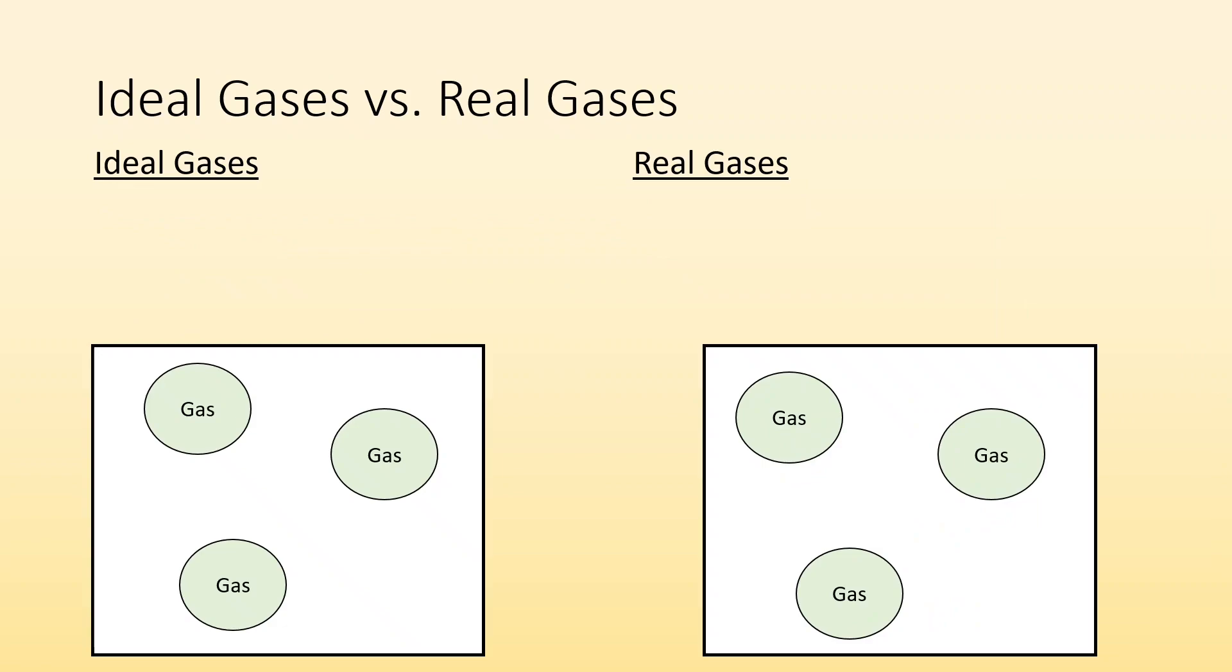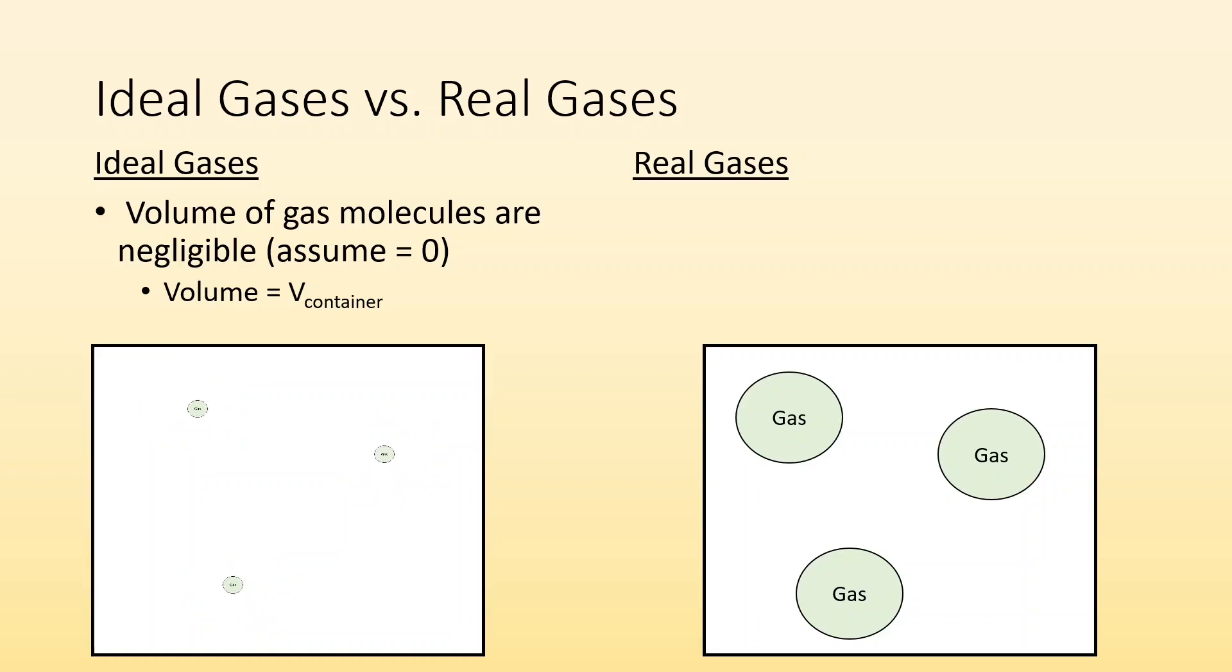Ideal gases versus real gases. What's the difference? In ideal gases, we say the volume of the gas molecules are negligible. We assume that it's zero. The actual volume they can occupy is the entire volume of the container. These particles are so tiny, they're not even there. But real gases, molecules have a non-zero volume. The actual volume they can occupy is the volume of the container minus the volume of all the molecules.